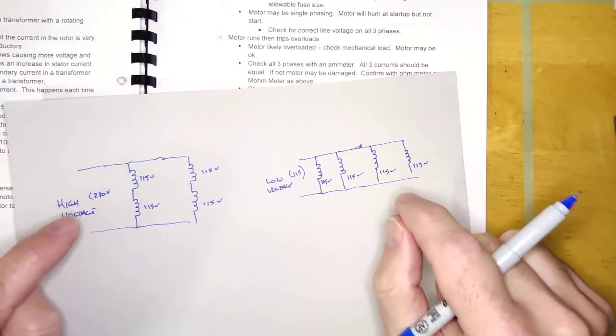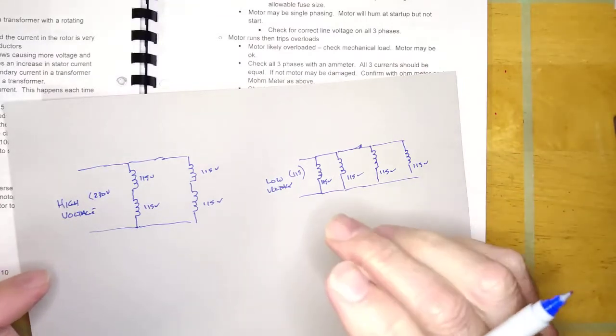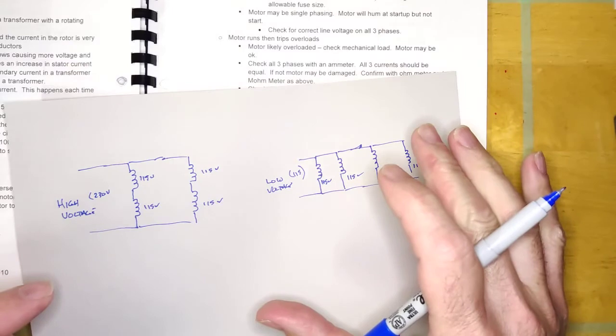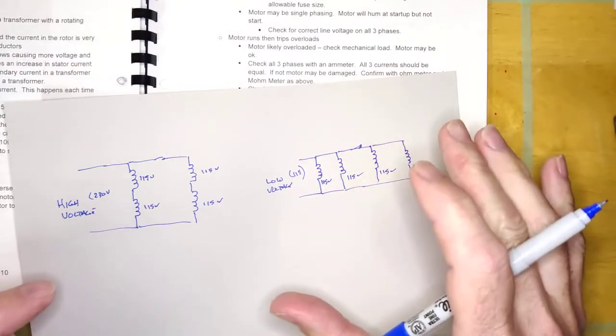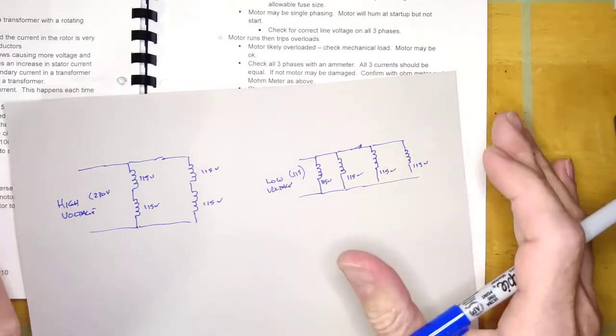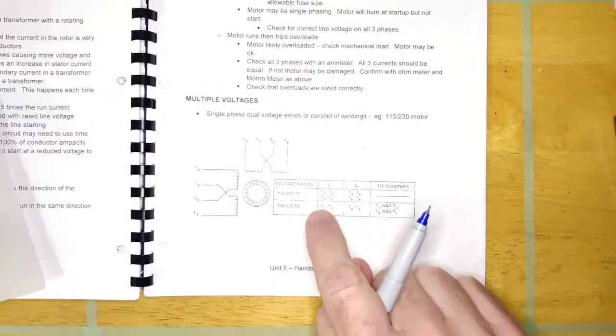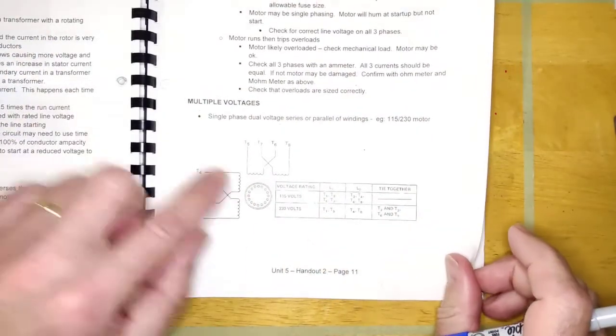And now you've just hooked it, everything in parallel, and so now it's connected low voltage. And that's because it's going to be, let's say, 115 for this particular machine here, which means this guy gets 115, this guy gets 115, this guy gets 115, and this guy gets 115.